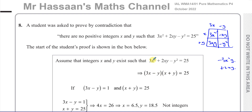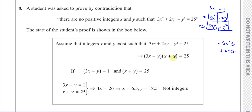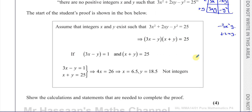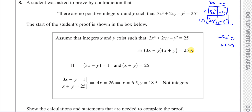So now, if you multiply these two factors together and get 25, we've got to think about all the different ways of that happening. Two integers multiplied together to give you 25 — one possibility is 1 and 25. So it's possible that (3x − y) = 1 and (x + y) = 25. That's one way you can have two things multiplied to give you 25.